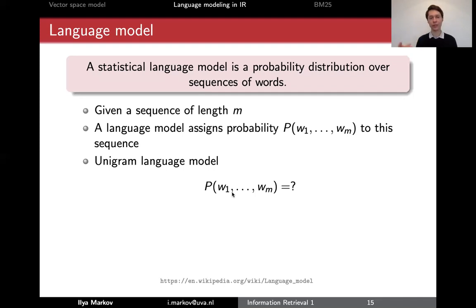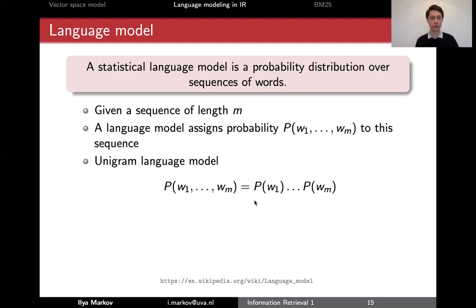So these words are independent, and since these words are independent, the probability of their sequence is just the product of separate probabilities. That's just an example, and that's actually the type of language model we will work with in the course.